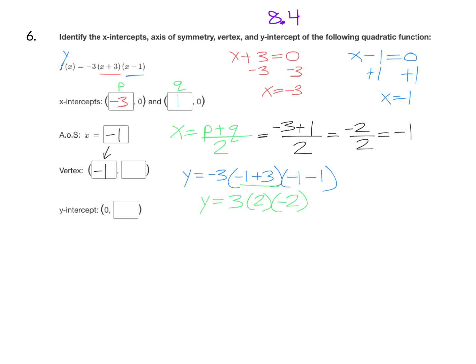Now just multiply those numbers together. Negative three times two is negative six, and negative six times negative two is 12. And feel free to use a calculator if you need to. There we have the vertex at negative one, 12. You could also put this function into your calculator and go to the table and find negative one, 12 right in the table.